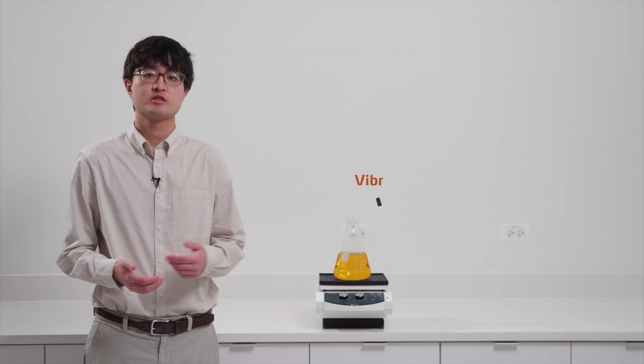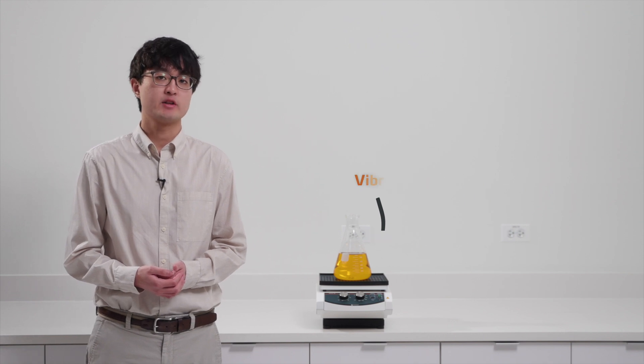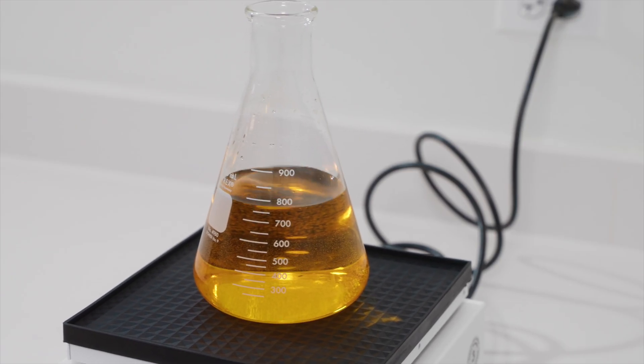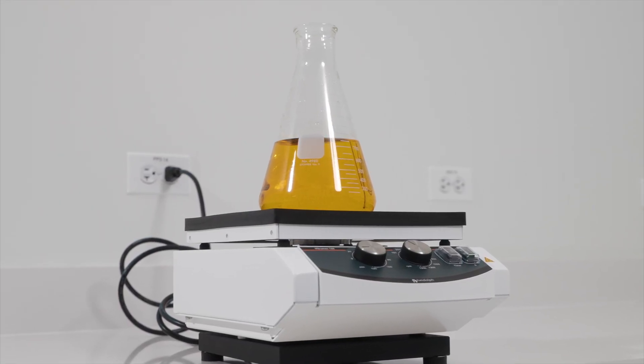If you want a platform shaker more suitable for other types of glassware, then the Vibramax 100 is the model for you. The Vibramax 100 shakes at speeds between 150-1350rpm and has a vibration orbit of 3mm.